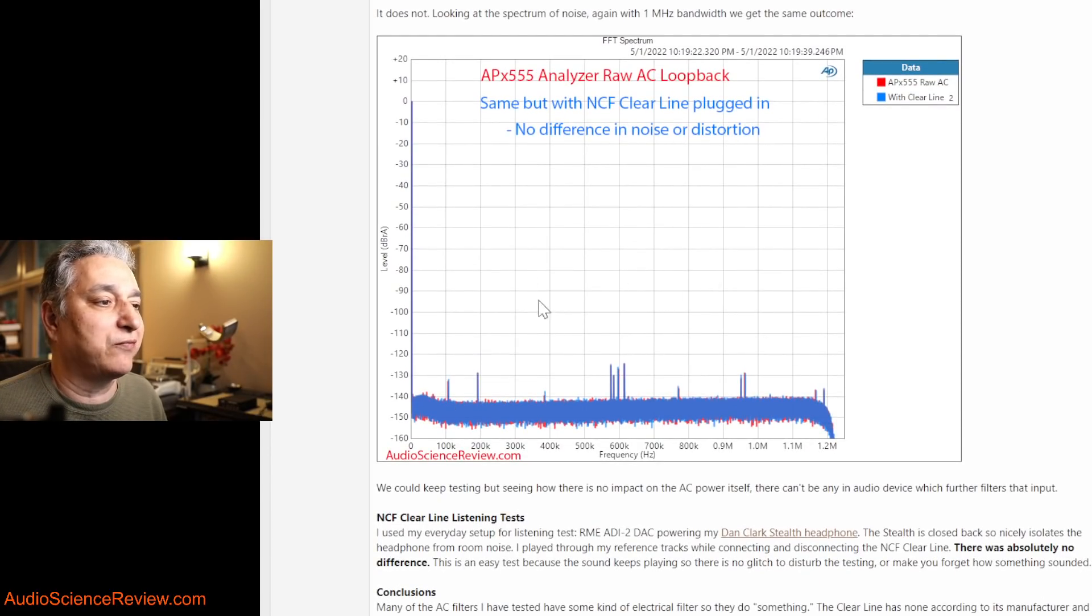You have to go two digits past the decimal point before you even see that, and again, that's just run-to-run variation. So no difference whatsoever in the performance of the audio analyzer. We can look at the spectrum of the noise. Of course, it's much cleaner. We see that the worst case noise is minus 125, minus 130 dB. This is our main tone and this is all the extra distortion, all hugely below audible band. Whether I plug in the Clear Line or don't plug it in, performance remains identical.